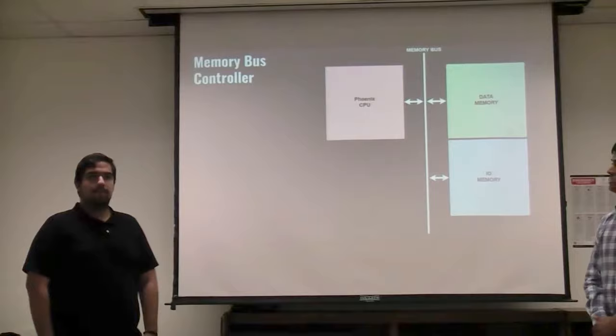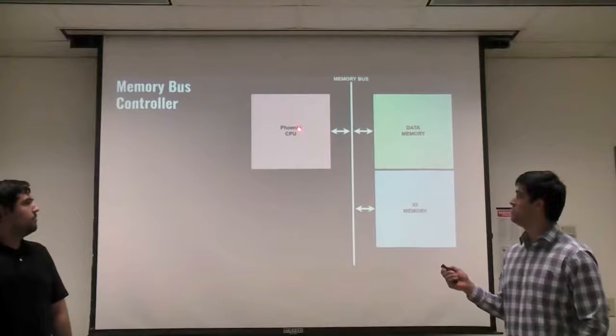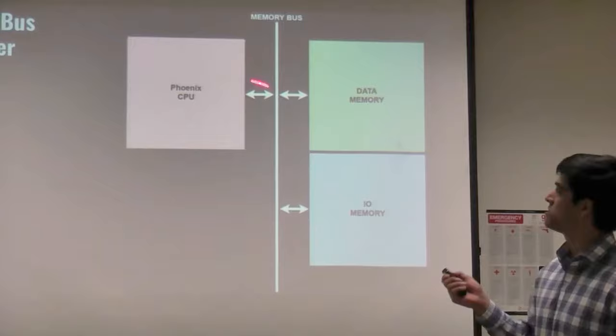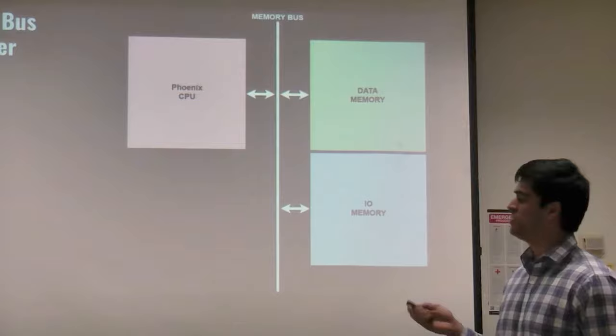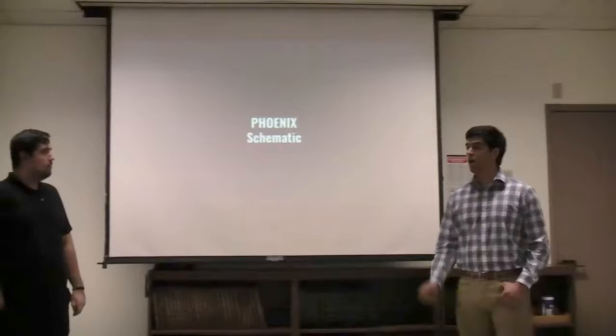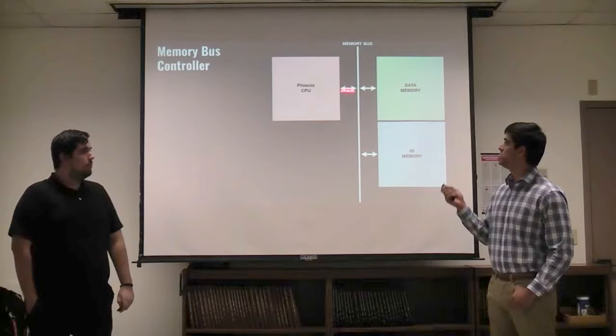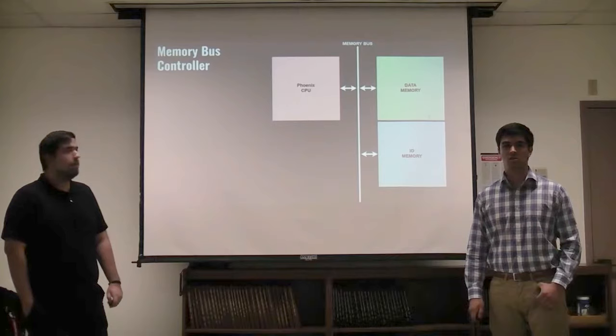Next, we're going to be talking about the memory bus controller. On the top left we have the CPU. On the right-hand side we have the memory modules. The way the CPU is going to be interfacing with the memory modules is through this memory bus for storing and reading information. The memory bus controller is how we're going to be transferring data between the registers of the CPU and the data memory by using store and load, or input and output instructions.